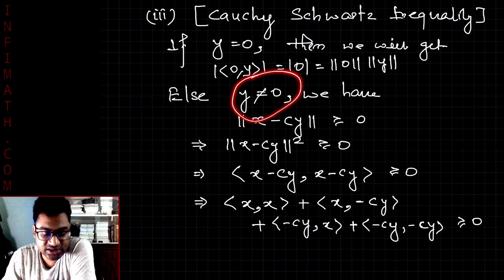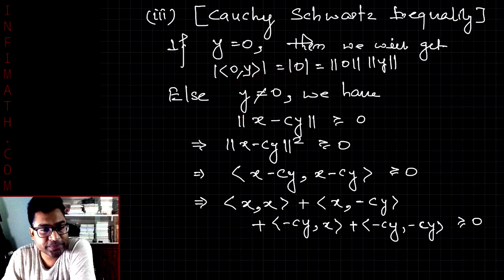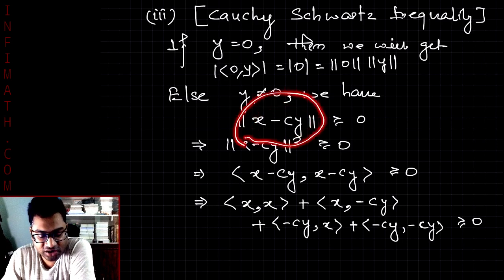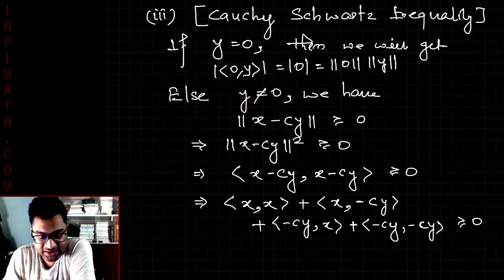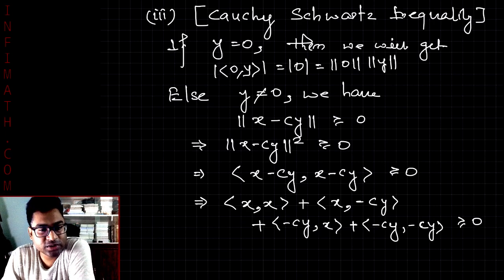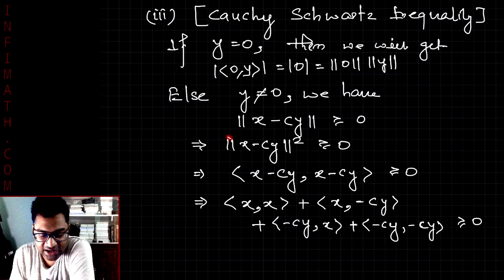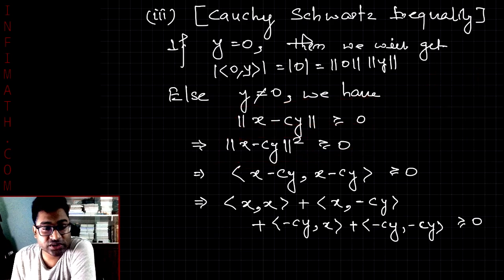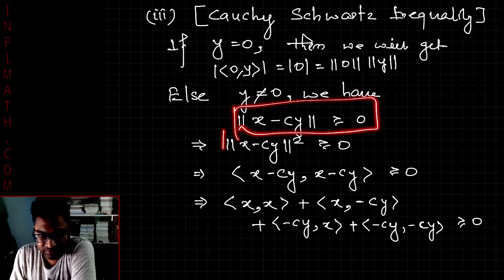Now consider the second case: y not equal to zero. For any vector x and any scalar c, we consider the linear combination x minus cy. By the properties of norm, the norm of x minus cy is greater than or equal to zero, and we will prove the Cauchy-Schwarz inequality using the properties of the inner product.